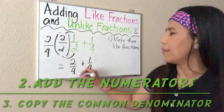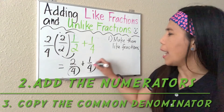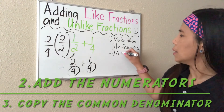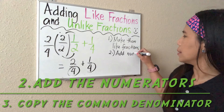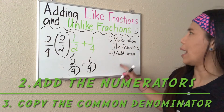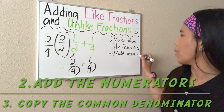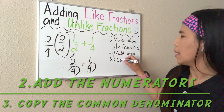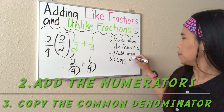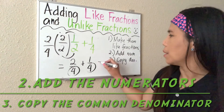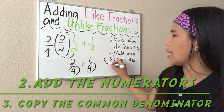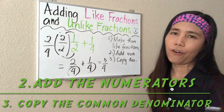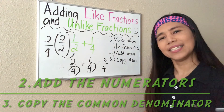Now they have the same denominator, so I can add the numerators. Just like we did with like fractions, we add the numerators and copy the denominator. Two plus one is three, and we copy four — giving us three-fourths.